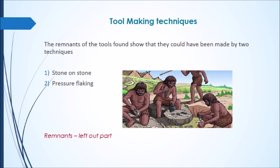We studied that the early humans used stone tools. Some tools were also made of the bones of animals. They used tools such as spears and arrows for hunting animals, to cut roots and fruits, and also to scrape the bark of trees. Now let us see how these early humans made these tools.